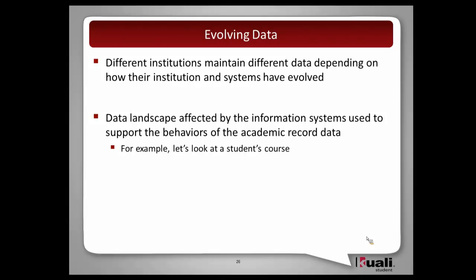Understanding how records have evolved and how other data have been managed, we can see how different institutions could be maintaining different information based on these factors. Institutions evolve in different ways — typically with the technical solutions we deploy. Different decisions about the boundaries between academic records may have created different environments. As we've gotten computerized, there are more things we're trying to accomplish. We're not just looking at a paper record — we're doing live GPAs, so that when I make a change to that academic record and change a grade from three years ago from an incomplete to an F, I have an expectation to have that GPA recalculated through all cumulative calculations. There's a lot more data behind the scenes to manage that information.